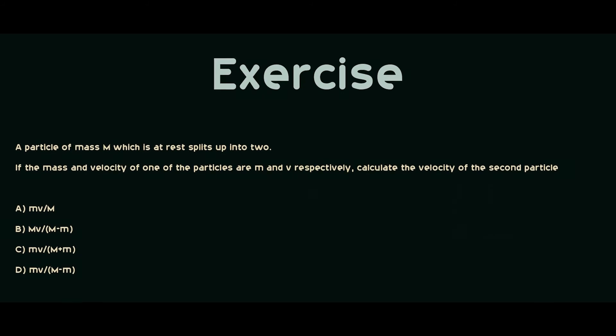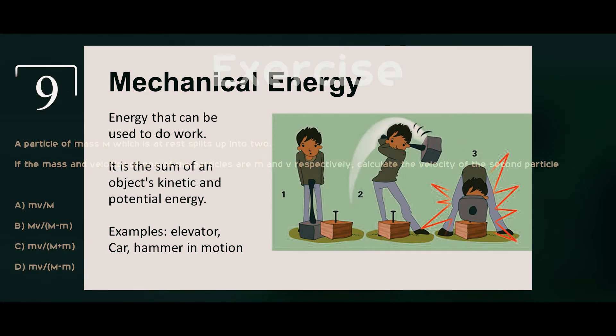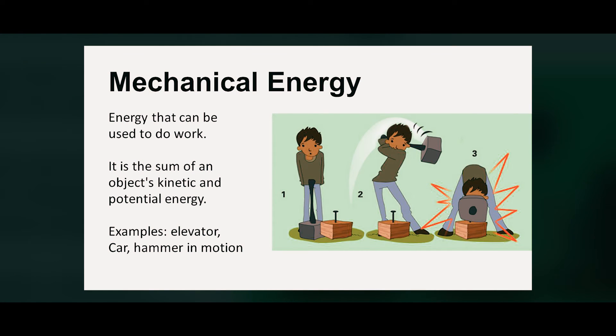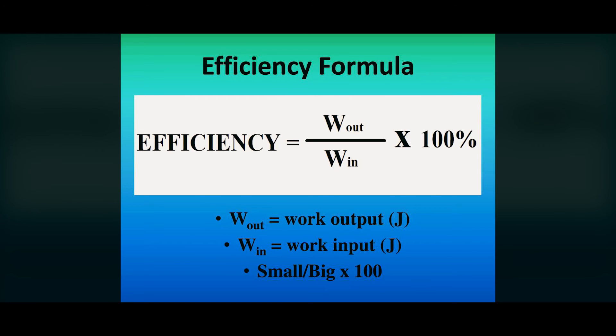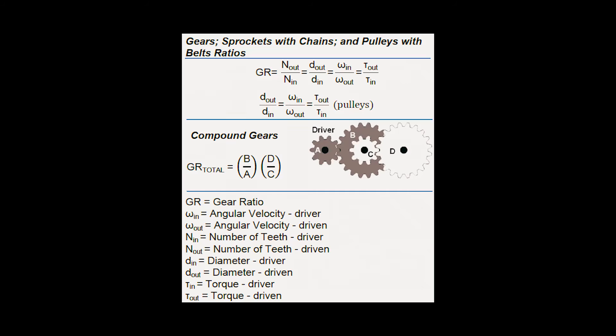The ninth is mechanical energy. Here you should know the formula for efficiency of a machine, the types of machines, and the velocity ratio formulas.